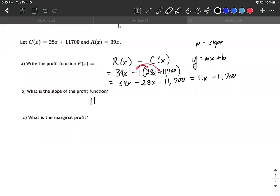But m, the slope, it's going to be 11, or in our case we can say that's $11 because of the real life implications on this.